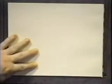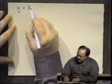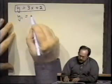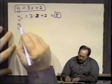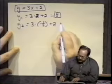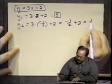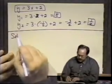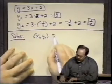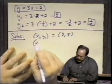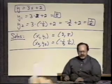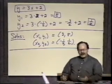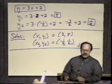Substituting into y equals 3x plus 2: y₁ equals 3 times 2 plus 2 equals 8, and y₂ equals 3 times (minus one-half) plus 2 equals minus three-halves plus 2 equals one-half. So the solutions are (2, 8) and (minus one-half, one-half) — exactly the points we found on the graph. We've solved this both algebraically and graphically.